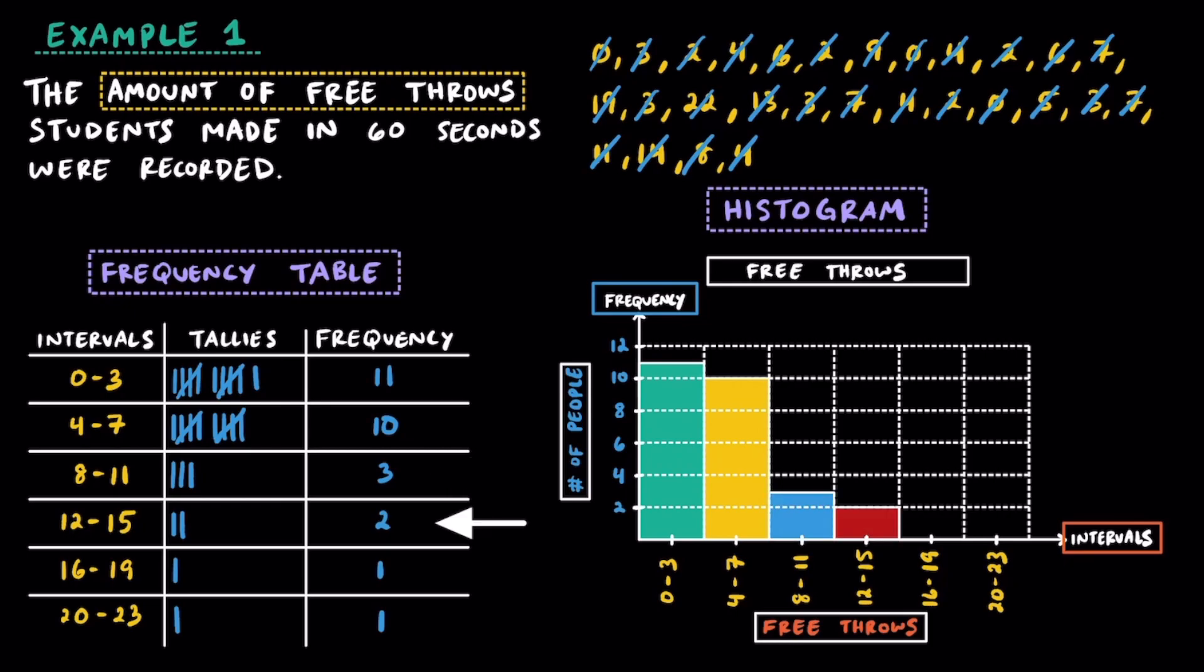There were 2 students that made between 12 and 15. Only 1 student made between 16 and 19 free throws, and only 1 student made between 20 and 23 free throws.